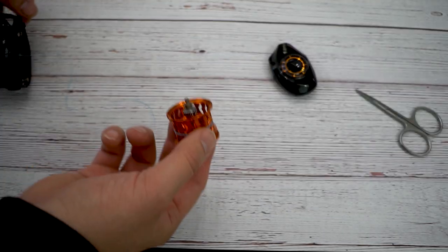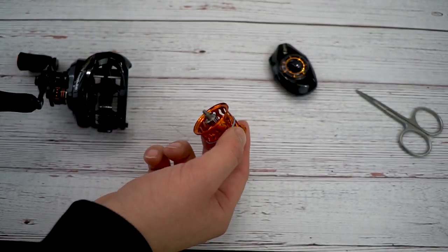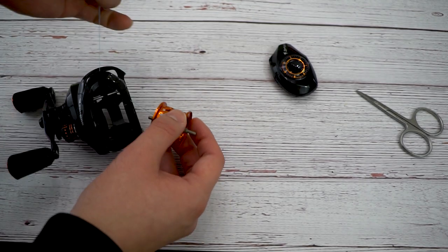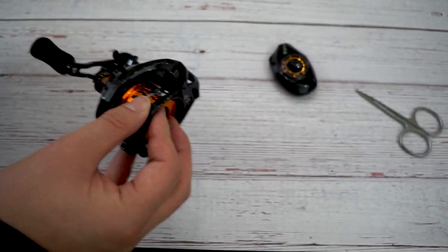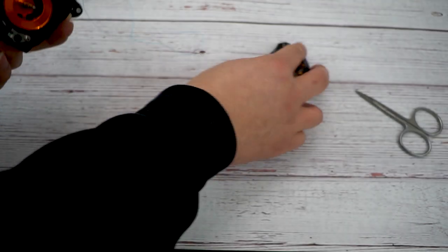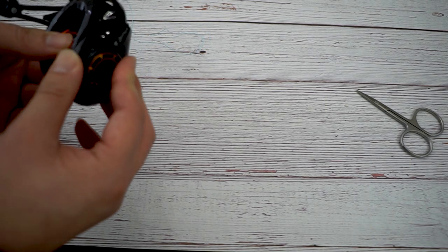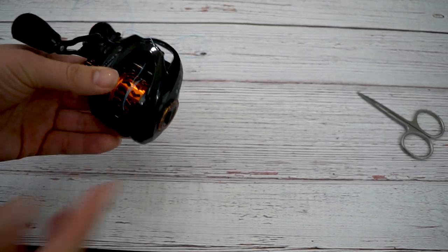And now you just take your line, pull your line out, put your spool right back into your reel, just like so. Make sure it's seated properly. Then you close down. Close your plate.